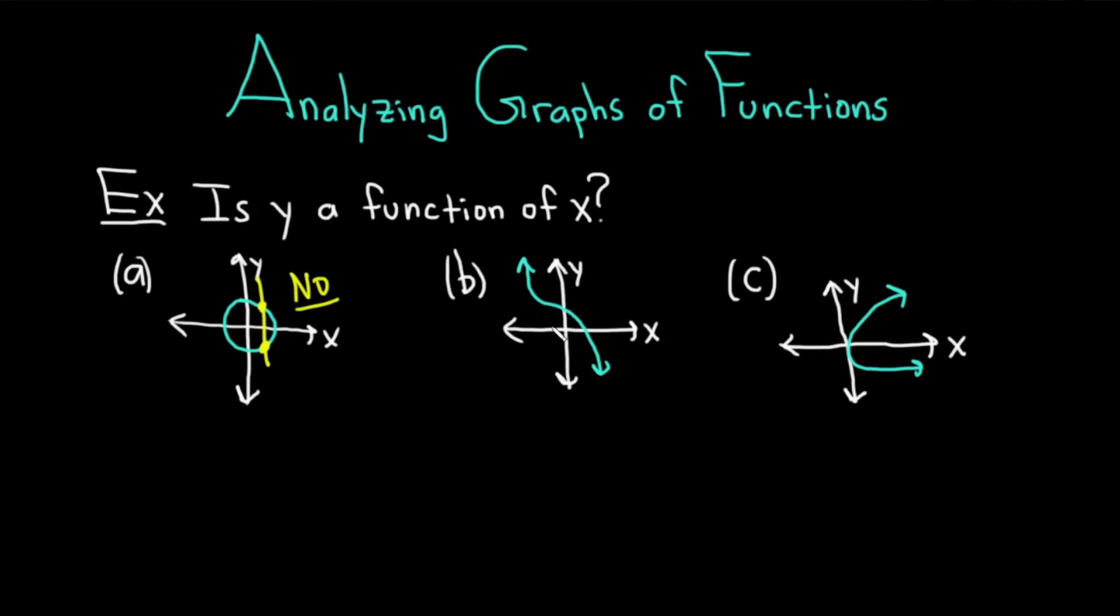What about in part b? Can I find a vertical line that crosses more than once? And the answer is no. It's impossible. No matter how many vertical lines I draw, I can draw one here, draw one here, draw one here. They all cross the graph exactly once. This means that yes, this graph does define y as a function of x.